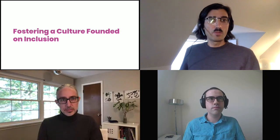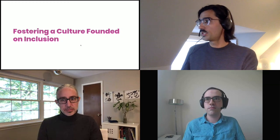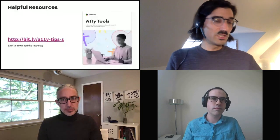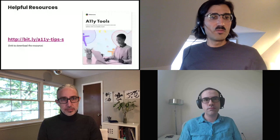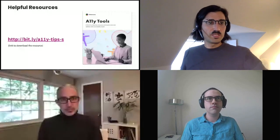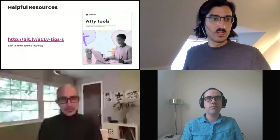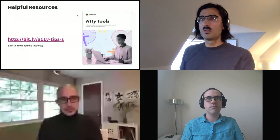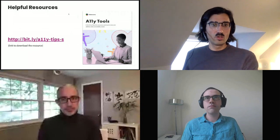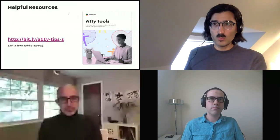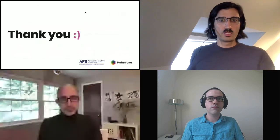We're coming up on time. Before we go, we wanted to leave you with some resources — a PDF download that has links to some of the tools we mentioned, utilities, standards, how-tos, and FAQs. A good place to get started is available at bit.ly/A11y-TIPS-S. If you'd like to get in touch, you can reach out to Kalamuna at kalamuna.com or the American Foundation for the Blind at AFB.org. Let's see if we have some time for questions.